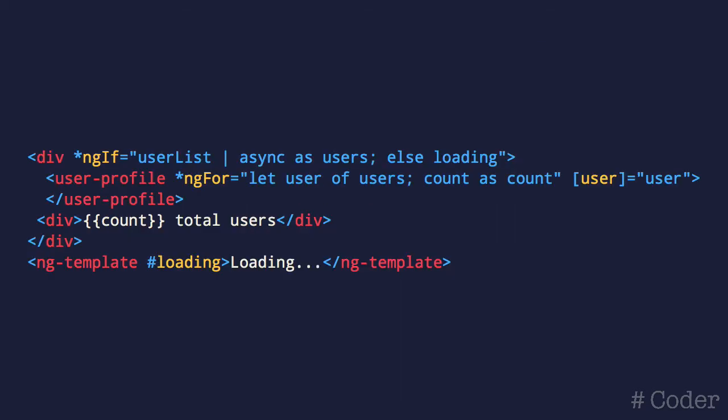So what features can we expect in the template binding syntax? First off, the ngIf directive has been updated to include else statements. We're now also able to assign local variables in our templates, which is useful in cases such as when we're unrolling an observable. In this example, we use an else statement in the ngIf directive to show a loading indicator if the user list hasn't loaded yet. We also create a couple of local variables — one called users that references the user list, and another in the ngFor directive named count. These variables can be used anywhere in the template as long as they're in scope.